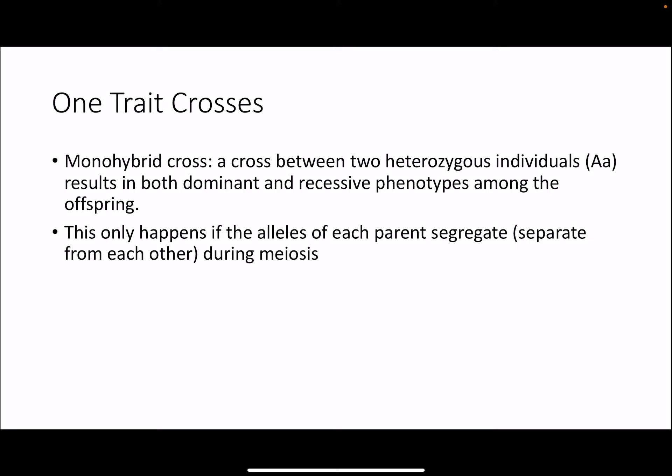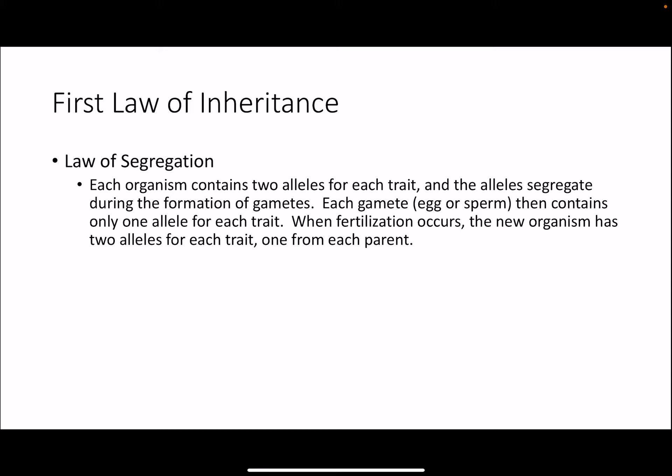A monohybrid cross is a cross between two heterozygous individuals — an individual that has a dominant allele and a recessive allele. This results in both dominant and recessive phenotypes among the offspring, and this only happens if the alleles of each parent segregate, meaning they separate from each other during meiosis. This leads us to Mendel's first law of inheritance: the law of segregation, in which each organism contains two alleles for each trait and the alleles segregate during the formation of gametes. Each gamete — either the egg or the sperm — then contains only one allele for each trait, so that when fertilization occurs the new organism has two alleles again, one from each parent.